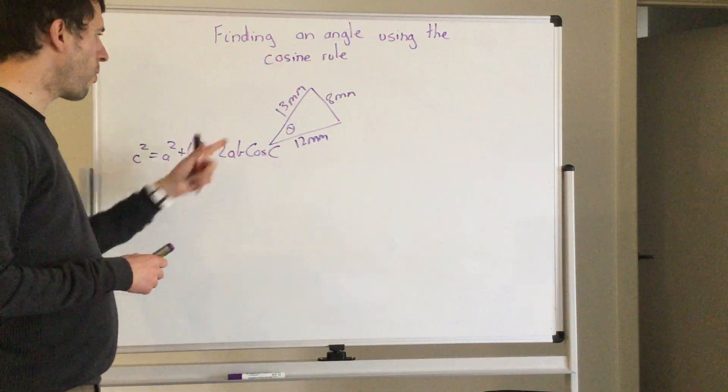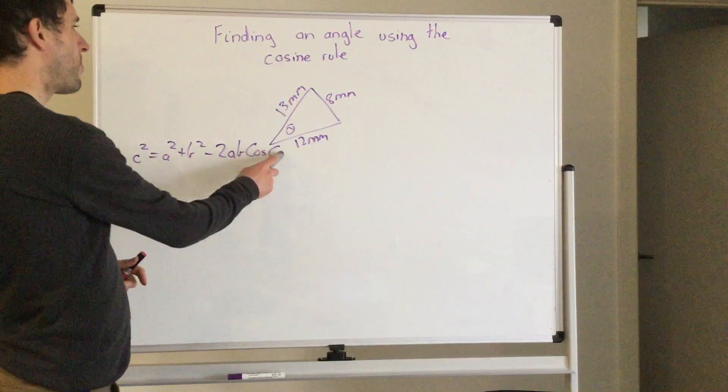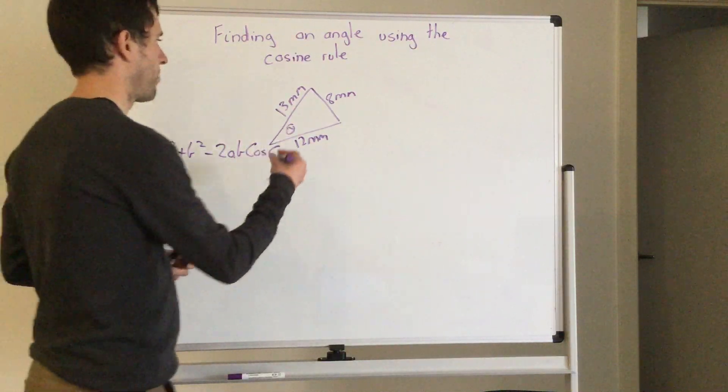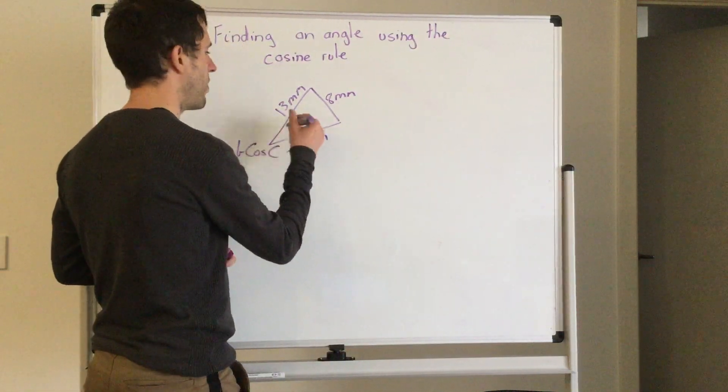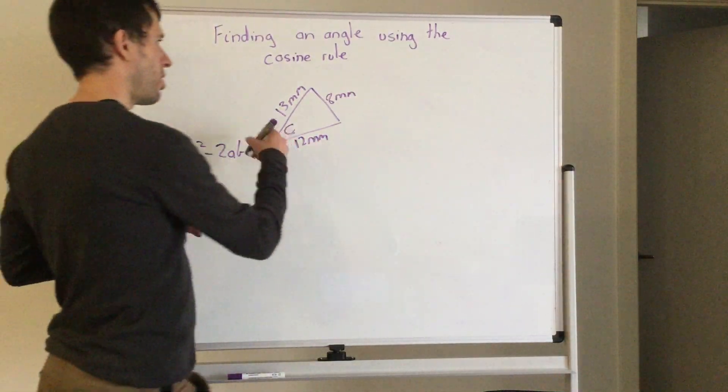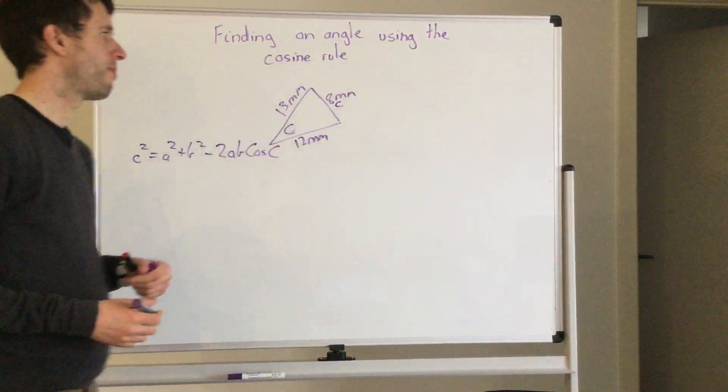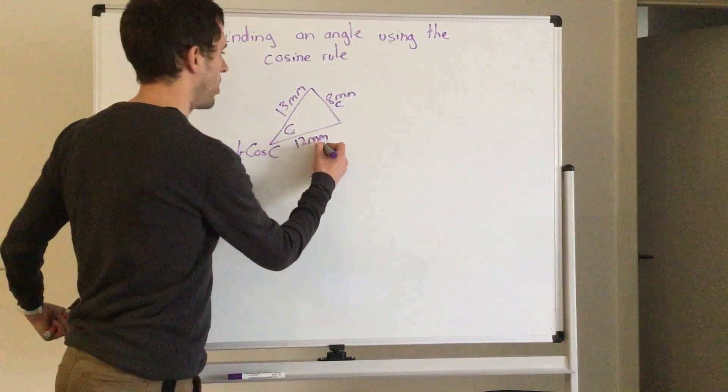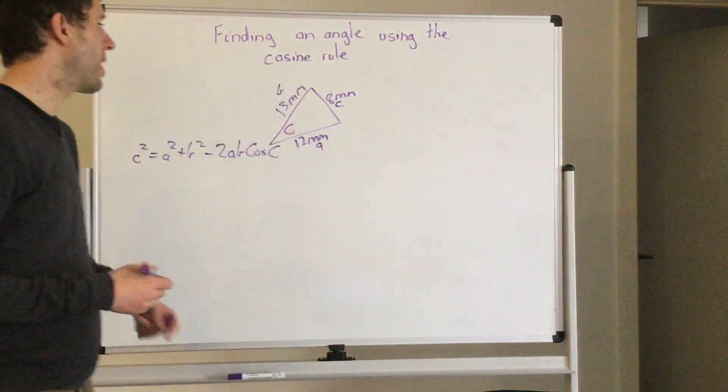To get started, we are thinking about, well, our angle is c, so I'll change alpha to c, which means that is going to be c side, and these two are going to be a and b, or b and a, it doesn't matter.